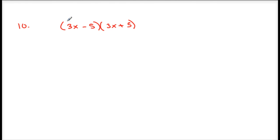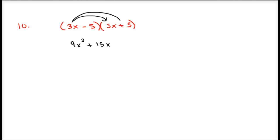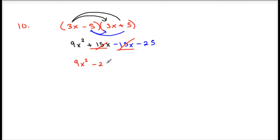One more: the quantity 3x minus 5 times the quantity 3x plus 5. Notice these are the same except for the middle signs — this is actually another special product we'll get to in the next lesson. Let's see what happens: 3x times 3x is 9x squared; 3x times 5 is positive 15x; negative 5 times 3x is negative 15x; negative 5 times positive 5 is negative 25. Combining like terms: the 15x and negative 15x simplify to zero, leaving 9x squared minus 25.